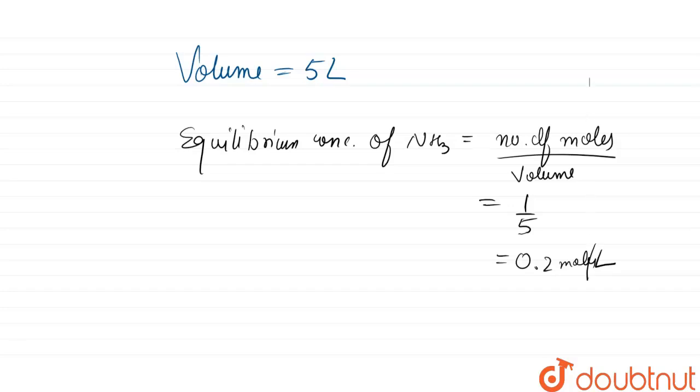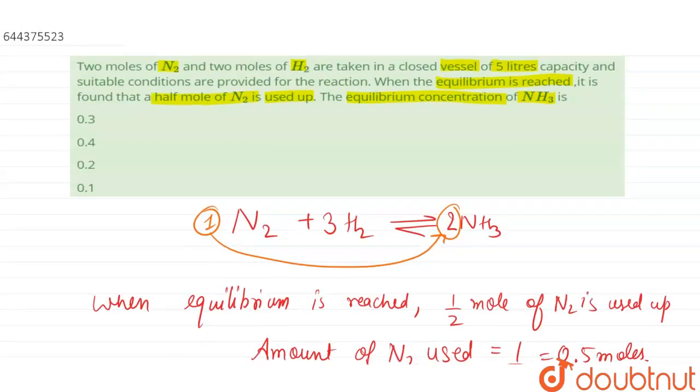So now let us have a look at the options that have been given to us. The equilibrium concentration of NH3 is 0.2 mole per liter. Option 1 is 0.3, that is incorrect. 0.4 is incorrect. Option 3 is the correct answer.